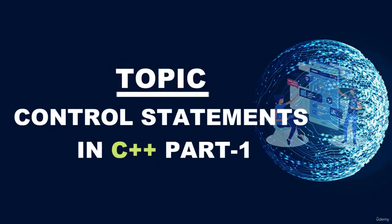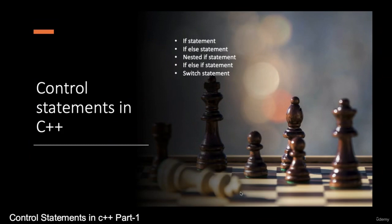We are going to study about control statements in C++. Control statements are used when we want to change the way of execution of a program. Suppose we have some conditions in our program and we have to change the way the program is currently executing — if a condition is met I need to do something, if a condition is not met I need to do something else.